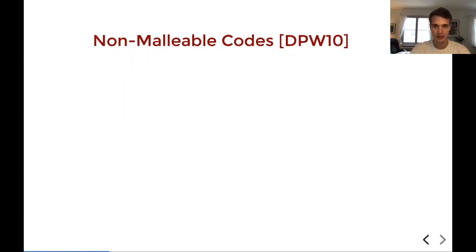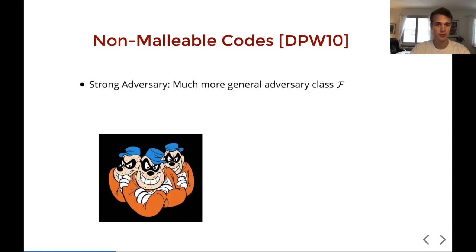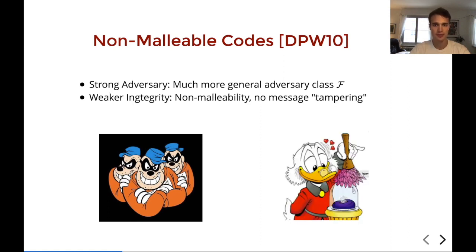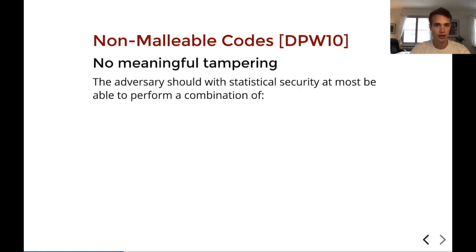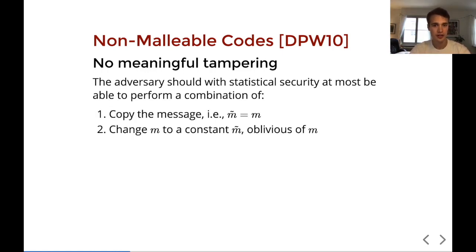But this is for a weak adversary. Then Dziembowski et al. in 2010 asked what happens if we have a much more general class of adversaries that's much stronger. The integrity criterion they came up with is called non-malleability or no-meaningful tampering. What we mean is that there is no meaningful tampering with the message in the sense that the following tampering is trivial: if you copy the message, that's pretty trivial. If you change the message to some constant message, that's also fair game. And finally, you can scramble up the message so that it doesn't make any sense anymore.